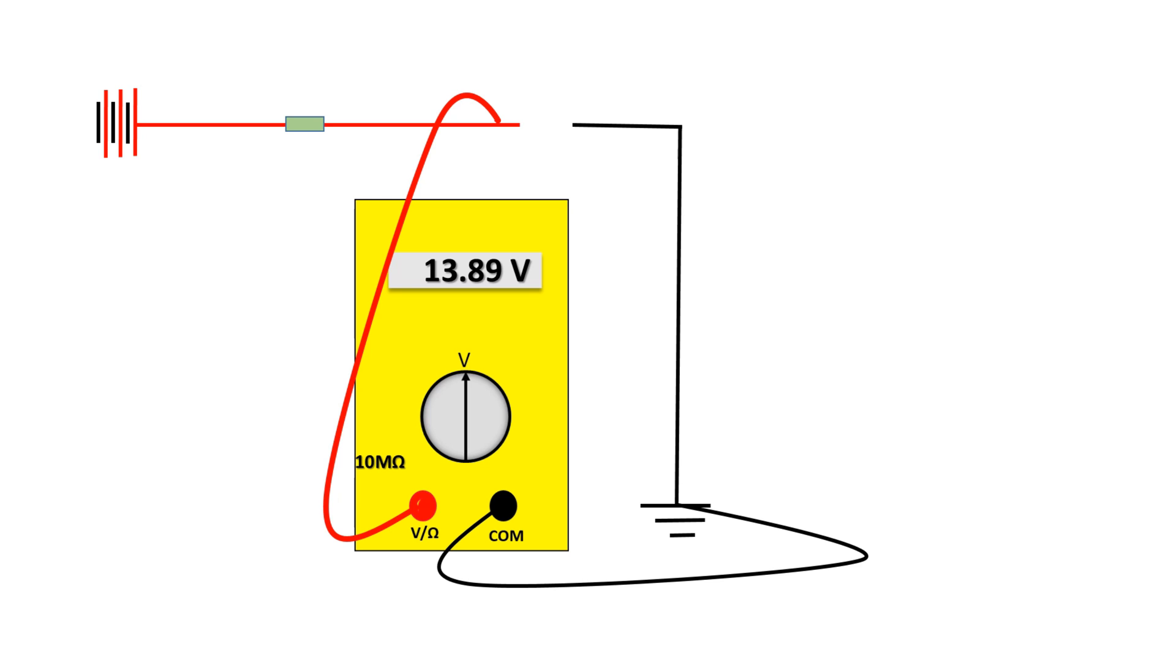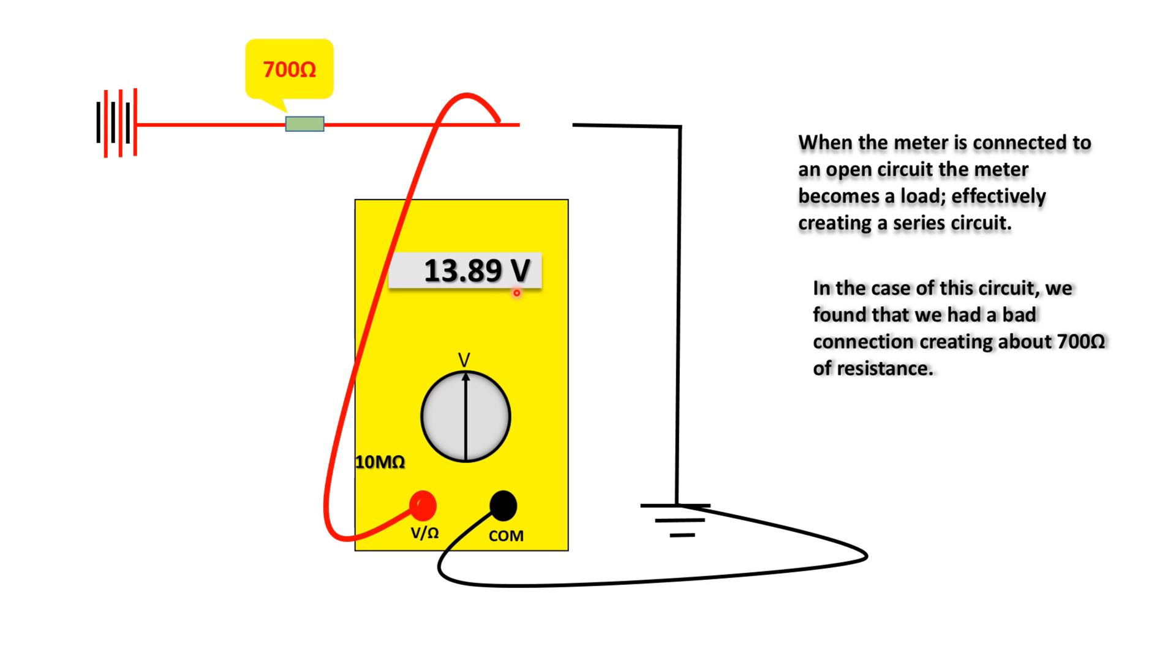Now let's go back to our original reading. When we disconnected the controller, we got 13.89 volts. Why is that? Why is there a difference in reading between open circuit voltage and back probing the component? Well when the meter is connected to an open circuit, the meter effectively becomes a load or the load in that circuit. So what you're doing is you're creating a series circuit. Now when we found out the problem with the circuit, we had a 700 ohm resistance in that power wire which was leading to a 4.5 volt drop.